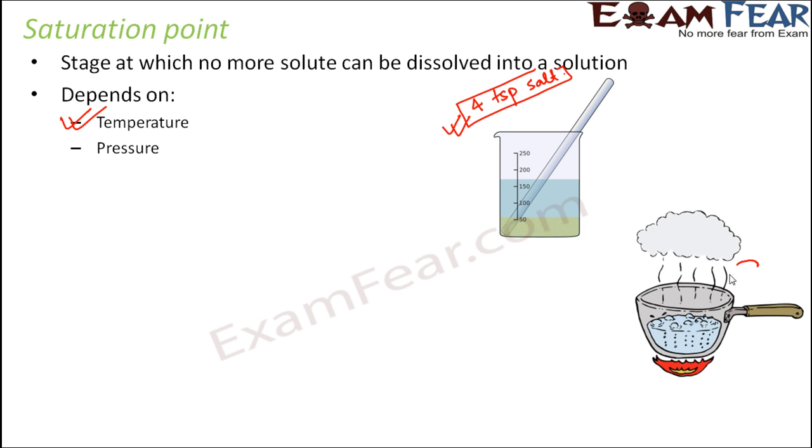When you start heating it, you add 2 extra spoons of salt. When you added the 5th spoon itself, it was not getting dissolved. But now when you heat it, the 5th as well as the 6th teaspoon of salt also get dissolved.